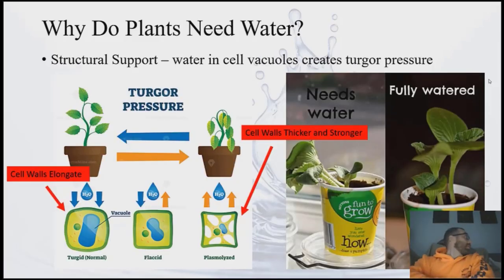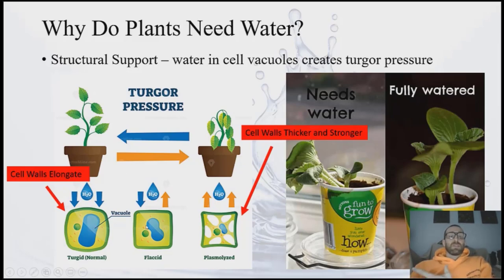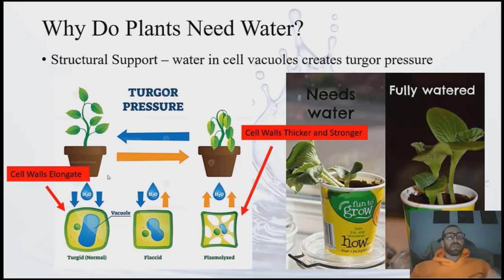Our plants also need water for structural support. In the interior of our plant cells there's an organelle called the central vacuole, and this organelle holds water amongst other things. As it fills up with water, it exerts pressure — referred to as turgor pressure — in the cell. What that does is press the cell membrane up against the cell wall, providing support to the cells and to the stem of our plants.